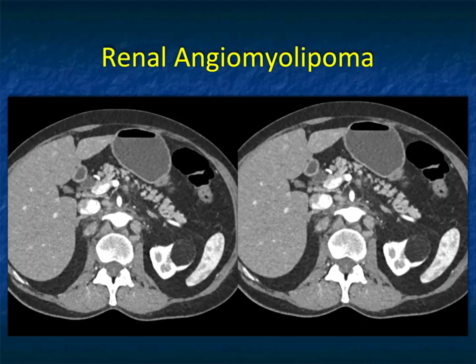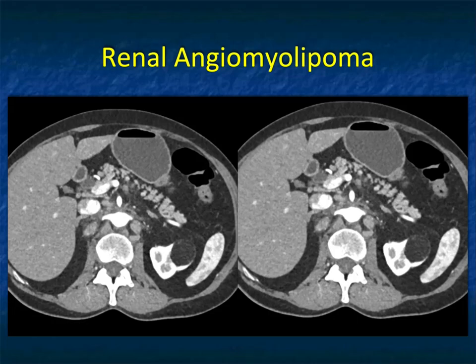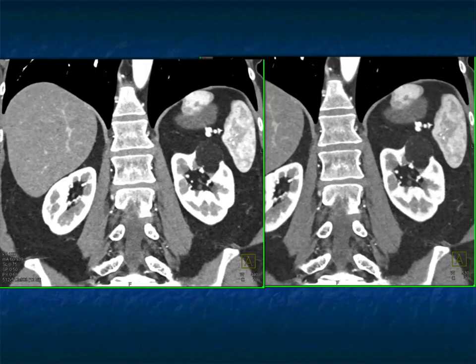Another pitfall in renal masses is angiomyelolipomas. Most are no issue — a large mass that's totally fat is an angiomyelolipoma. The questions come up about when to prophylactically resect. Some say over 5 cm, some say 4 cm, some say when there are prominent vessels. You're not worried about malignancy; you're worried about the possibility of bleeding. A 3 cm lesion — benign, next case.